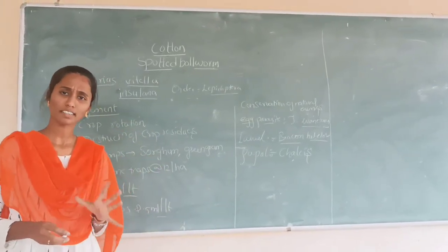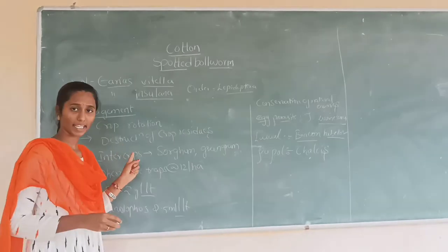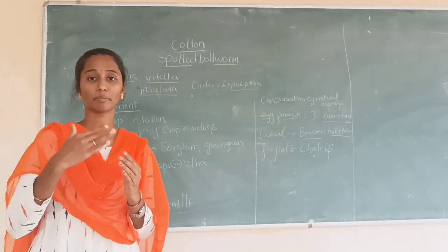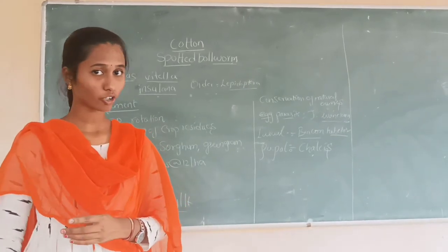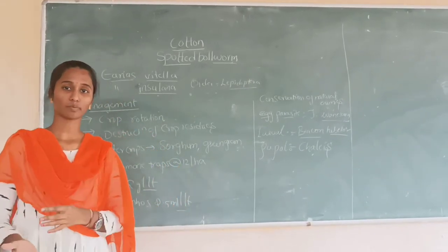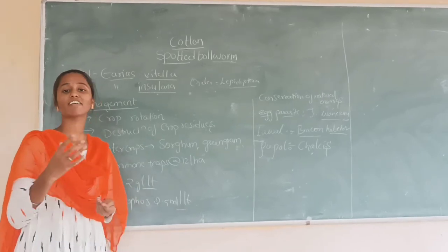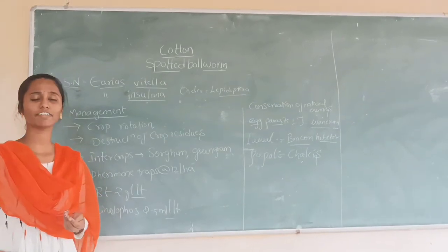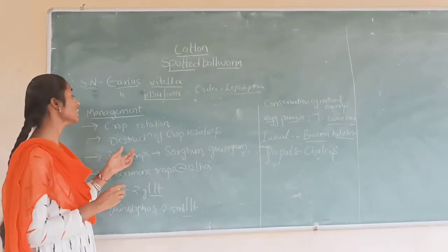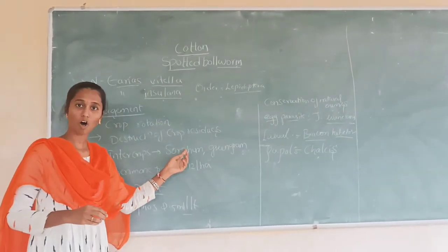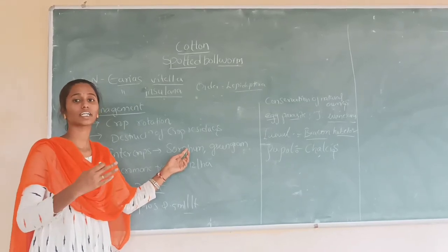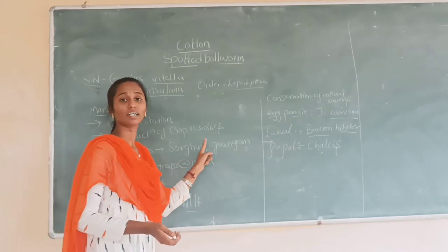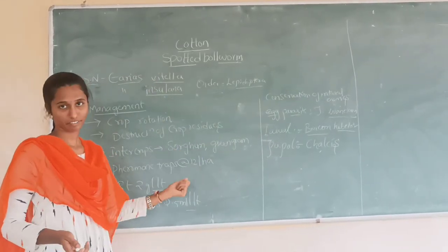I have the symptoms. For management, crop rotation should be adopted. Avoid cotton-related host crops. Select resistant varieties. Remove crop residues and alternate host weeds. Intercropping with sorghum and groundnut — these are the intercrop categories.